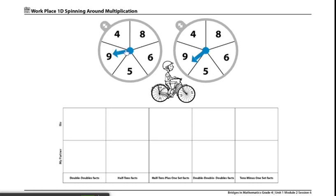For example, if I were to spin the spinner right now as player one, I got an eight and an eight. For this type of problem, it would be a doubles doubles doubles fact.